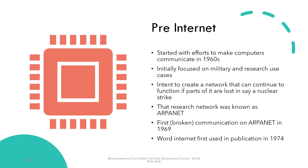Universities also got involved in the effort to share research. The first communication over ARPANET happened in 1969 when a student at UCLA tried to log into a mainframe at Stanford Research Institute. He successfully communicated letters L and O of the command 'login' when the computer crashed as he typed G. That initial hiccup was quickly fixed and the first permanent connection was made between UCLA and SRI in 1969.